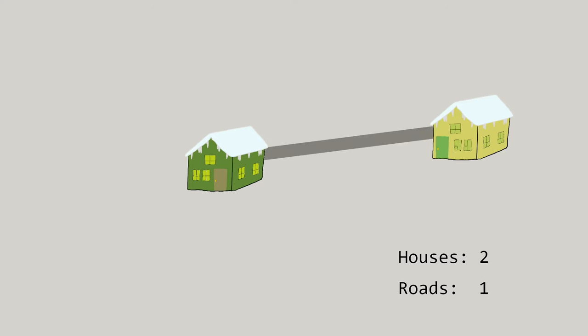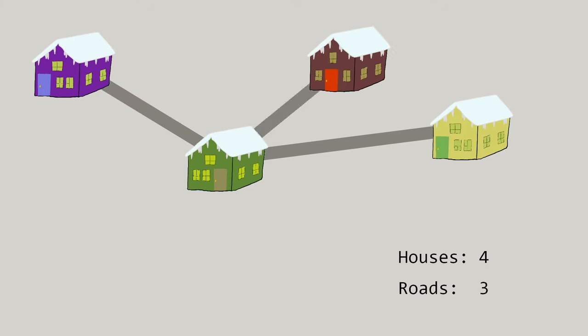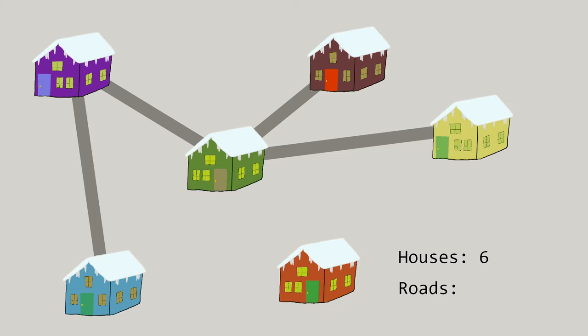Well, if we needed to connect two houses, we know we'd need exactly one road to connect them. So if we add a third house, we're going to need a second road. One more house, one more road. And with each additional house we add, we're going to need one more road to keep the town connected.